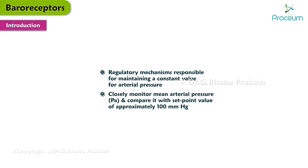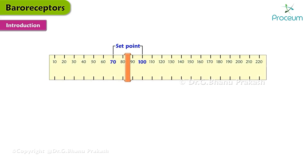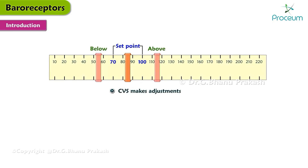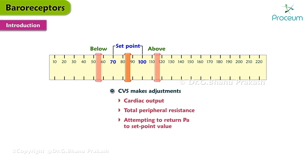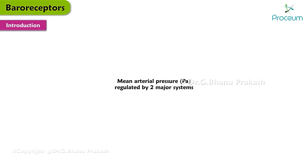...100 millimeters of mercury. If the mean arterial pressure or PA increases above or decreases below the set point, the cardiovascular system makes adjustments in cardiac output, in total peripheral resistance or TPR, or in both, attempting to return the mean arterial pressure to the set point value.